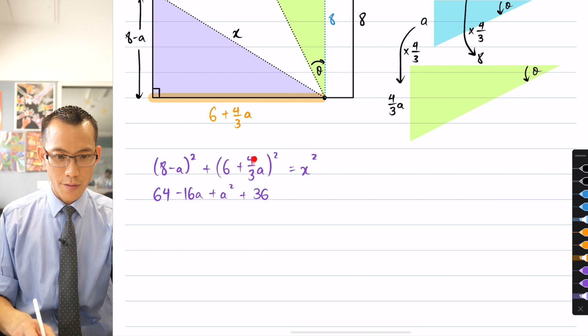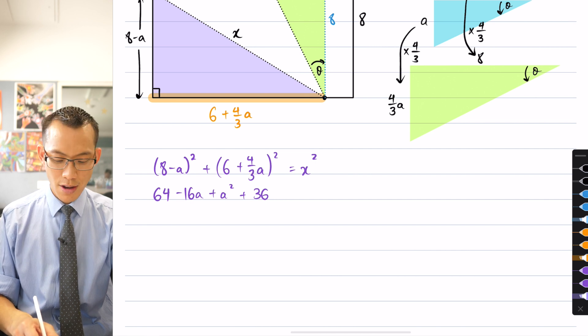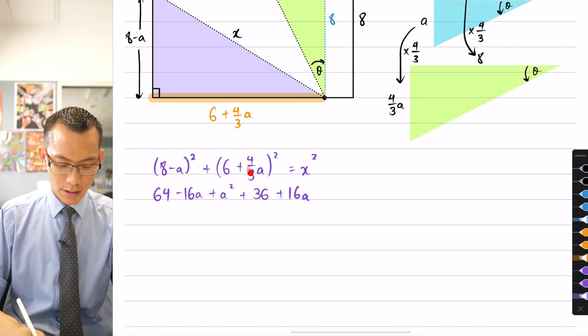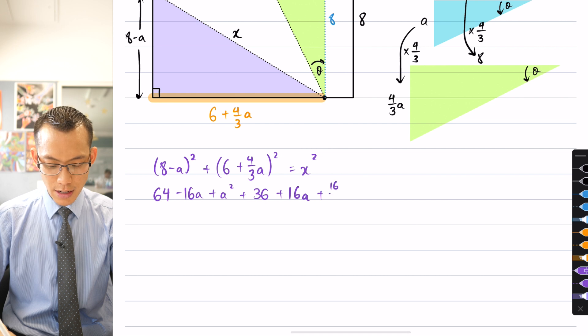These two are going to be multiplied together and then doubled. So the 6 times 4 over 3 is going to be 8, because 6 divided by 3 is just 2. And then I double, so that gives me 16 A. And then finally, I've got this term over here being squared. That gives me, careful with it, 16 over 9 A squared.